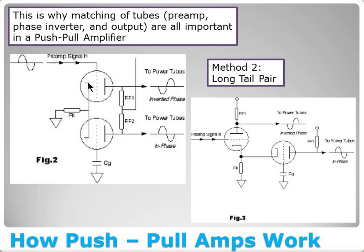In the long-tail pair, the plate output is biased to give gain. Because the cathode feeding the second half has unity gain, this second triode acts as a second-stage amplifier fed via the cathode. You get both phase splitting and amplification in this single stage — an in-phase amplified output and an out-of-phase amplified output feeding your power tubes.